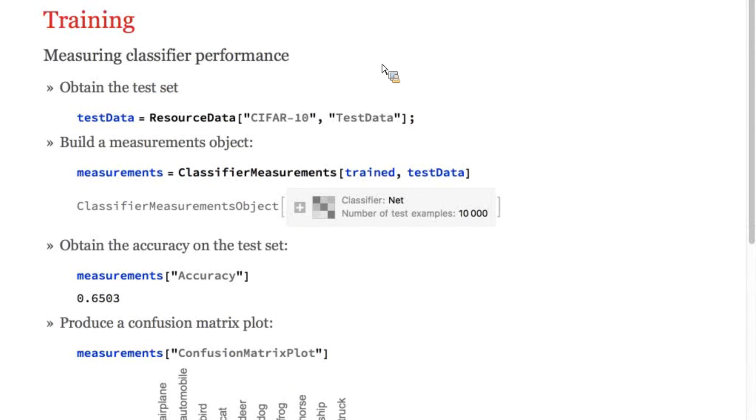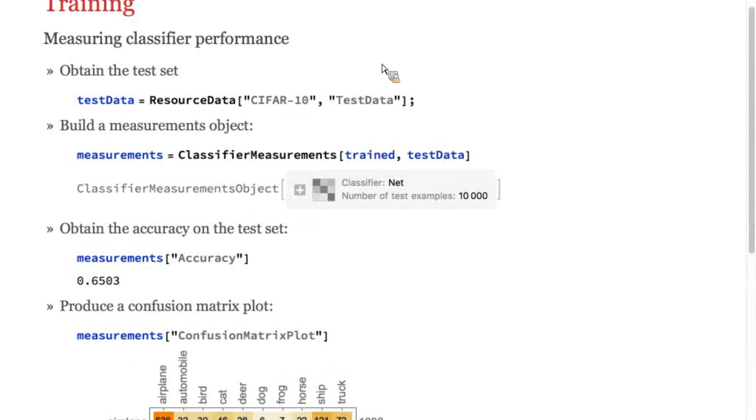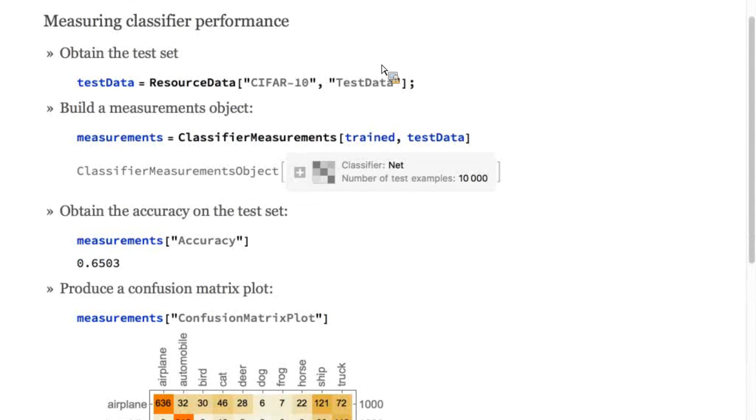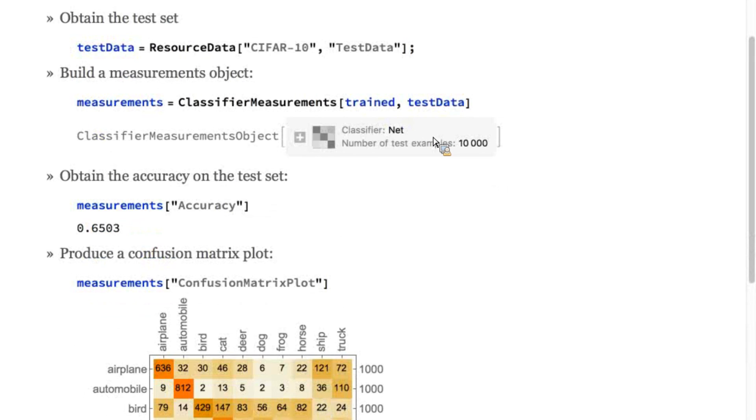I'll show you one more thing, which is, once you've trained a net, you might want to make all kinds of measurements of how well it performs. For that, you use the classifier measurements function. This is a general function that's used on the output of classify, but it can also be used on nets. And here, we're feeding it test data that the net wasn't exposed to during training, so it's a kind of fair comparison. It's not just memorizing the inputs.